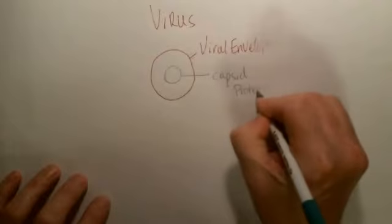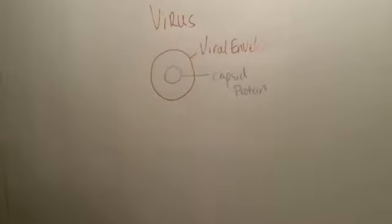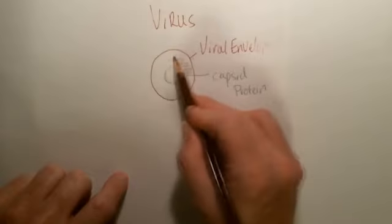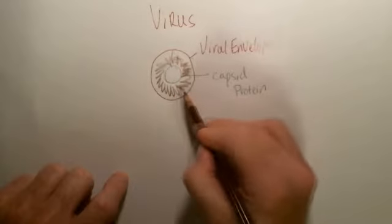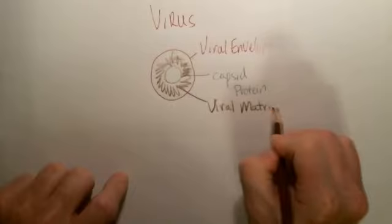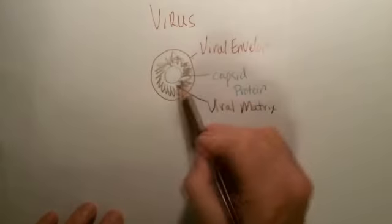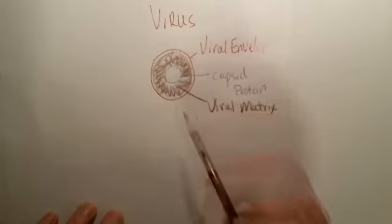The capsid has a very special function — it's made out of protein. It basically encloses the nucleic acid, the DNA or RNA, inside the virus. So its job is really to protect that piece of information found on the inside. In between the viral envelope and the capsid is an area called the viral matrix. The viral matrix is basically a group of proteins that connect this outer viral envelope to the capsid.